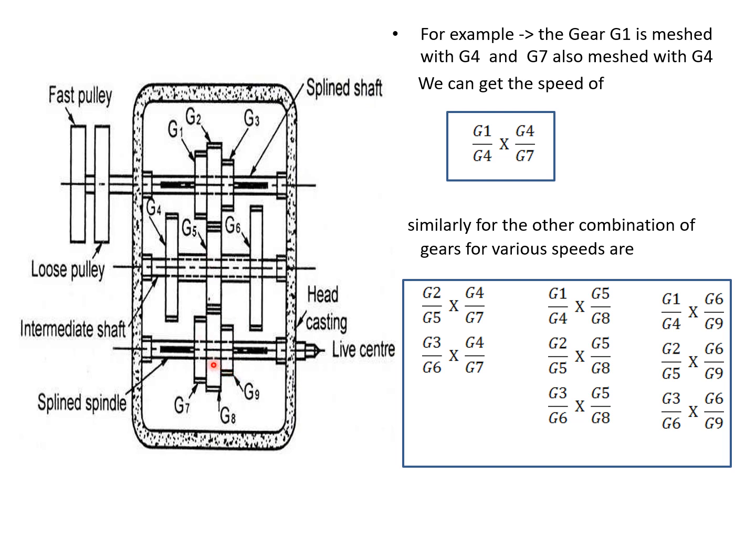Then, another reduction is G1 by G4 into G6 by G9. Then, G3 by G6 into G6 by G9.